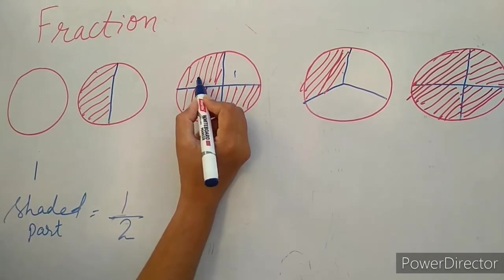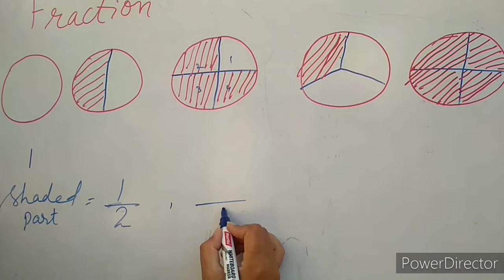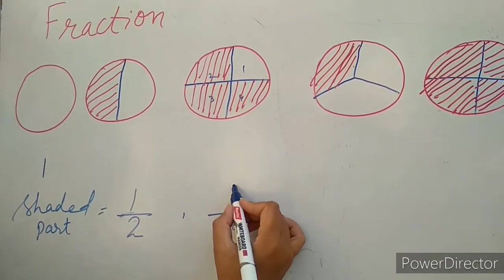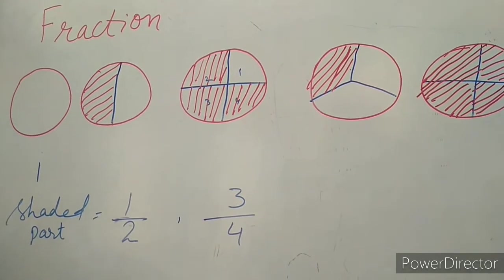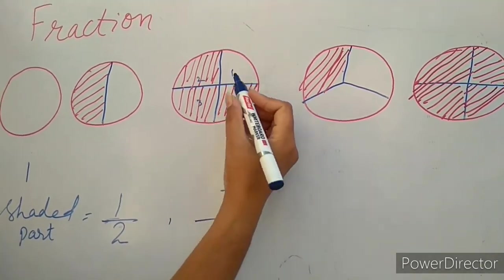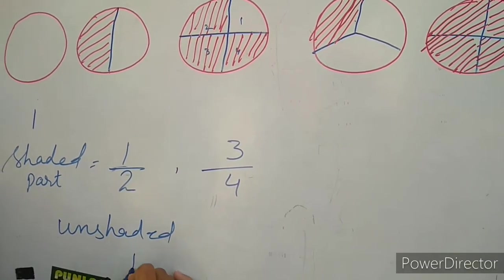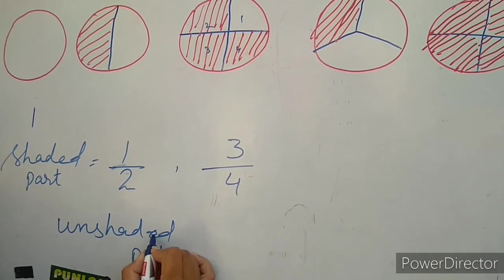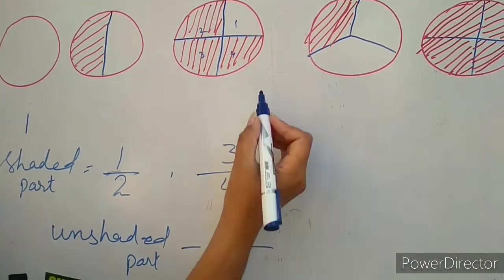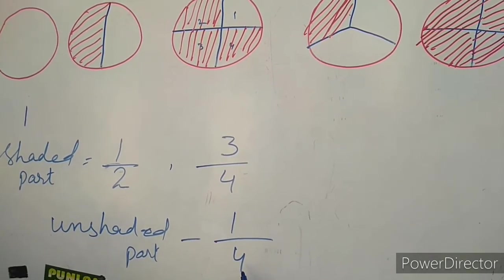In the next circle, it is divided into four parts. The shaded parts are three, so three over four of the circle is shaded — three parts are shaded out of four. The unshaded part is one, so we write one over four for the unshaded portion.